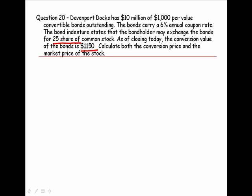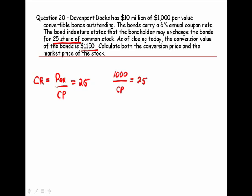We know that our conversion ratio is equal to the par value divided by the conversion price, and we are given that the conversion ratio is 25 shares. We also know that the par value is $1,000. So if we take $1,000 divided by the conversion price and we get 25, we're able to solve for the conversion price: $1,000 divided by 25 gives us a conversion price of $40 per share.